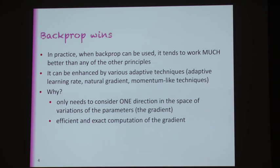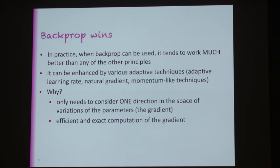I don't think I have the answer, but my intuition is that the main reason backprop is so efficient — in the sense of telling us where to move — is that it's really only considering one direction in the space of parameters or whatever you're trying to optimize, and it's the direction of the gradient. So it's not wasting time exploring other directions. There's the other aspect, which is that you have an exact and efficient computation of gradient, but even stochastic versions of gradient descent work really well. And there are many other credit assignment methods which are stochastic but don't work nearly as well.